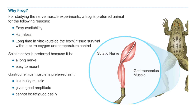Why are we taking frog or toad? Because it is the preferred animal due to its easy availability, it is harmless, and its tissue survives for a long time in vitro outside the body without any extra oxygen or temperature control. Among the amphibians, toad is preferred because it is easily available and harmless. Why gastrocnemius muscle? Because it is a bulky muscle, it gives a good amplitude, and it cannot be fatigued easily. And why the sciatic nerve? Because it is a long nerve, so it is easy to mount.